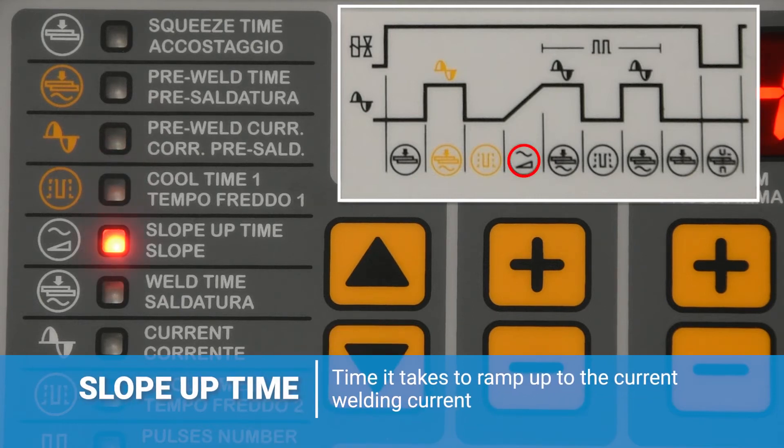Next, we have the slope up time or upslope time. This can be set between 0 and 25 cycles and is the time it takes to ramp up to the main welding condition.